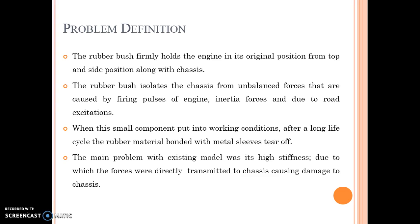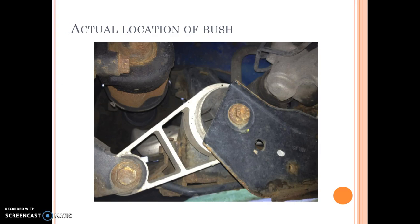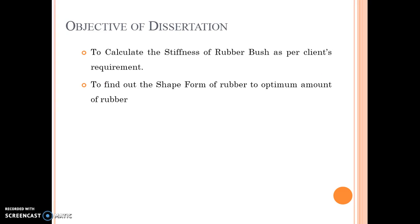When this small component is subjected to some working conditions, after a prolonged period of time, the rubber bonding with the metal sleeve gets torn off. The main problem with this rubber bush was that in the existing model, it was having a high stiffness. Due to the high stiffness, the forces were directly transmitted to the chassis, causing permanent damage to the chassis. This is the actual location of the rubber bush. The black material is rubber, and this is the covering where the bush is connected to the chassis and the engine is mounted on this bush.